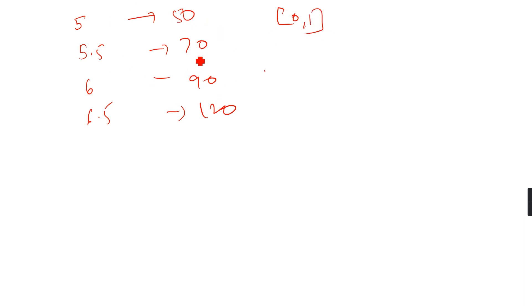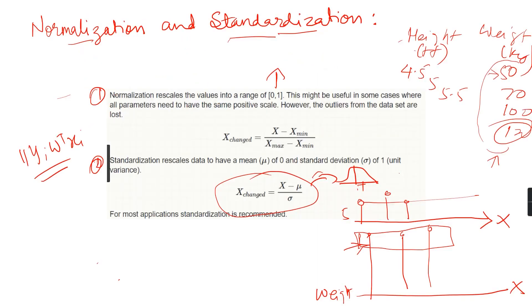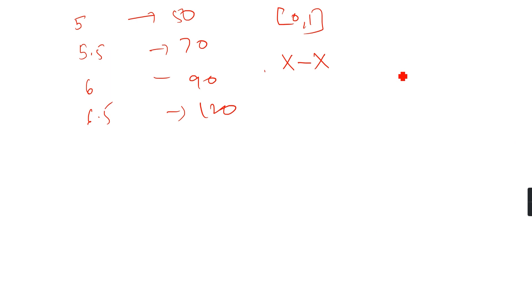What normalization will do is change this value to 0 to 1. The formula is x minus x_min divided by x_max minus x_min. Here, my minimum and maximum height is 5 feet and 6.5 feet.